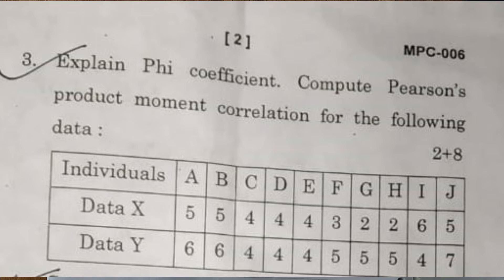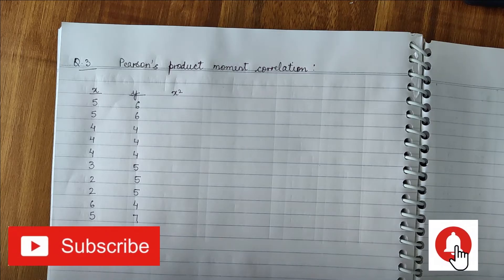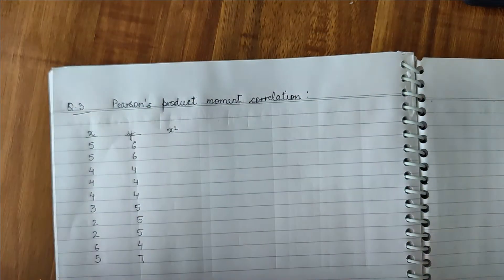This data is given by individuals A to J and their data X and Y are given. It's a very simple question, very simple for 8 marks. If it goes like this in exams, it's just fun. Just keep in mind, so here I will start.